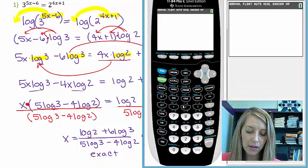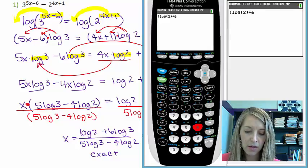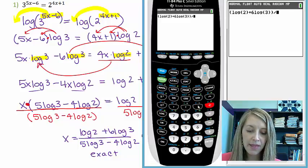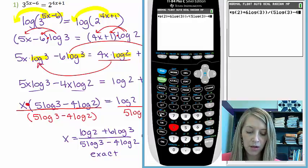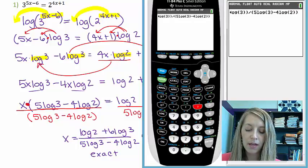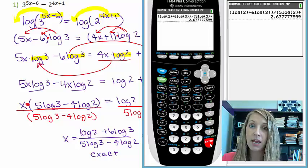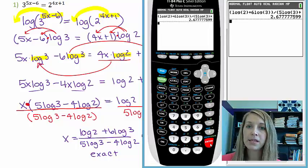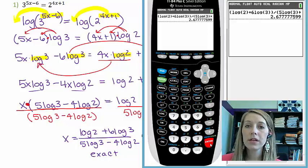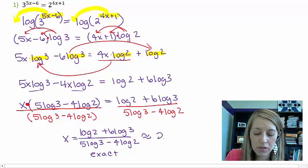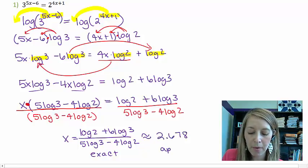If it wants the approximate answer, then all we need to do is type this in our calculator. So in my calculator, I have log of 2 plus 6 log of 3. And notice I have everything in the numerator in parentheses. And then I am going to divide that by 5 log of 3 minus 4 log of 2. And so my decimal approximation is 2.677777599. And again, this decimal continues forever. So I am going to round this to 3 decimal places. And so that would give me 2.678. So this is my approximate answer.